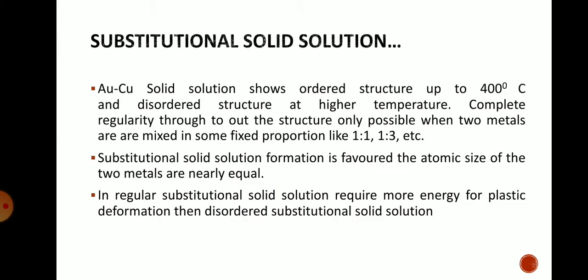A regular substitutional solid solution requires more energy for elastic deformation than a disordered substitutional solid solution. Substitutional solid solution formation is favored when the atomic sizes of the two metals are nearly the same. An example is the gold-copper solid solution, which shows an ordered structure below 400°C and a disordered structure at higher temperatures.